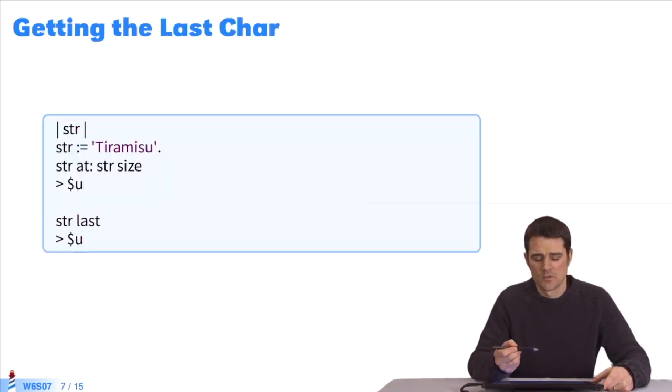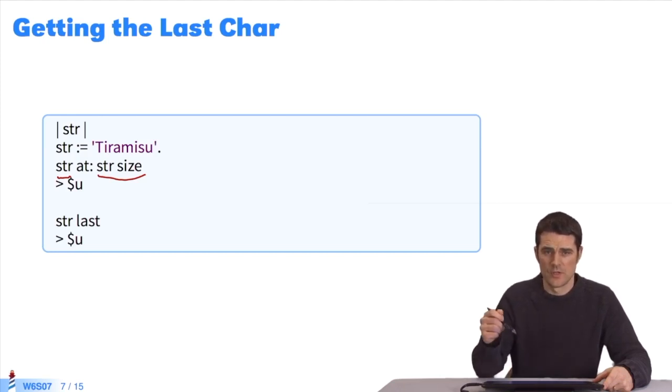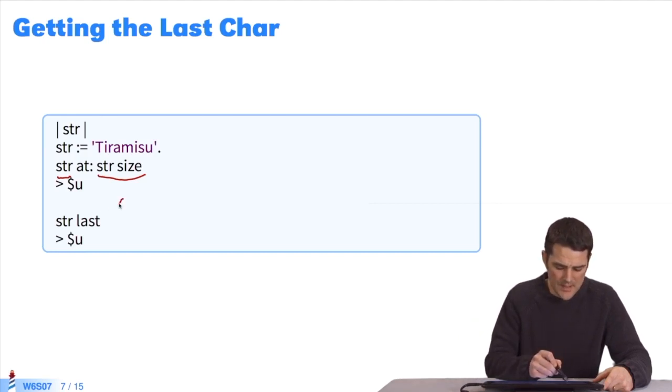Strings of characters are treated like any other collection. I can say that I want the last element of a string. If I ask for str at str size, I get the very last element. Don't forget, in Pharo, strings begin with index value 1. Therefore, the last element is the size of the string. Or we can simply use last to recover the last element.